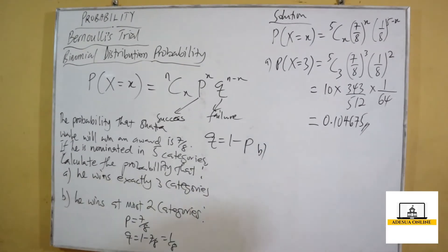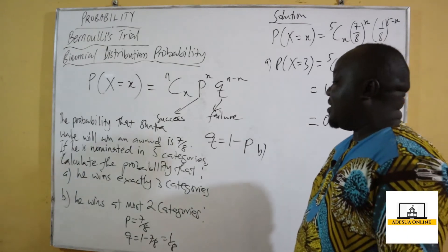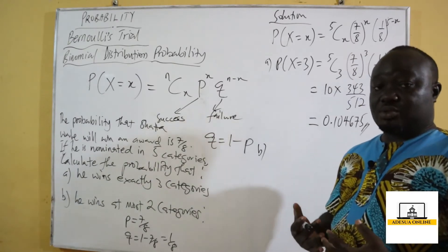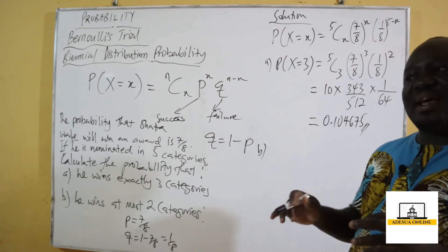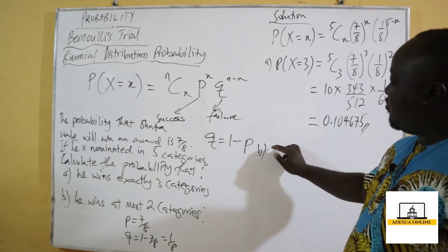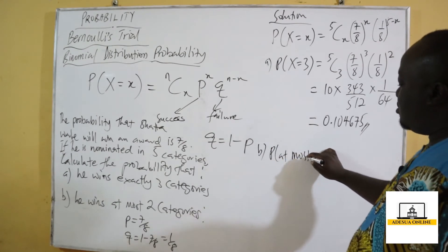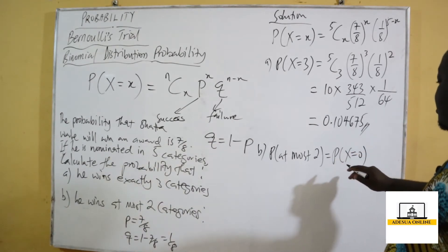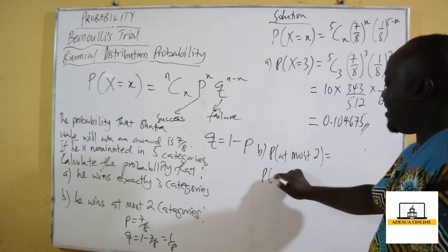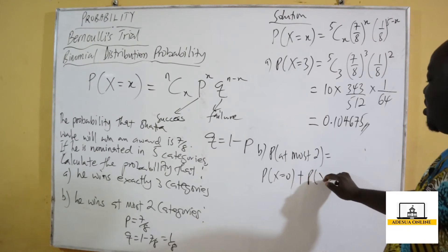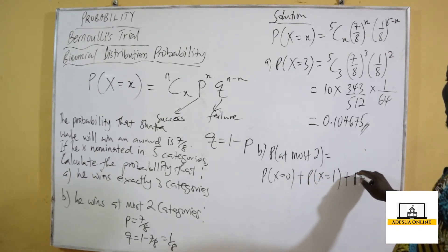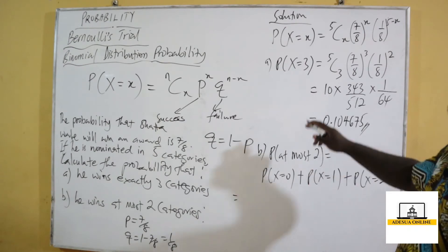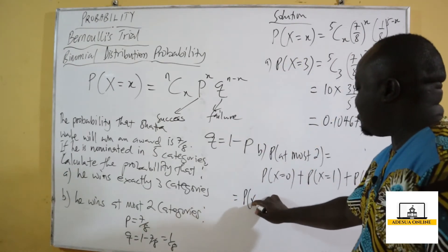We move to Part B: find the probability that he wins at most two categories. At most two means the highest is two. So it can happen that Shata Wale didn't win any award — x equals zero — or he won only one award, x equals one, or x equals two. That's at most two. So we calculate P(X = 0) plus P(X = 1) plus P(X = 2).